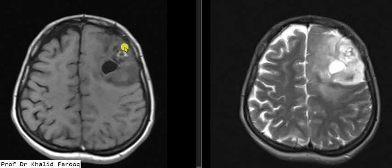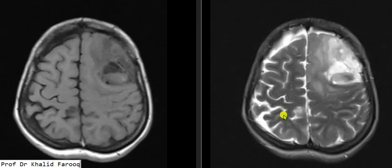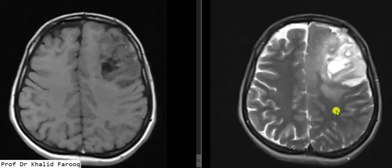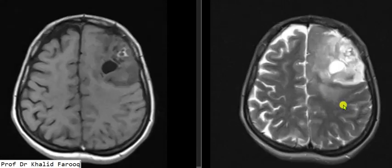The mass lesion involves the left frontal lobe anteriorly, involving the cortical gray matter and adjacent underlying white matter, with mass effect on the brain parenchyma. There is also a mild degree of vasogenic edema.